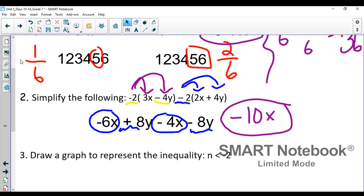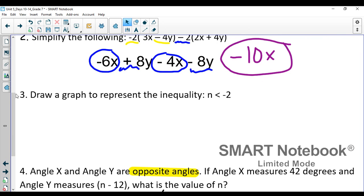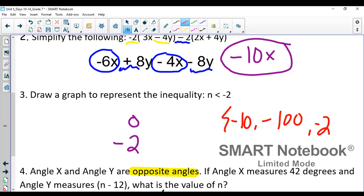Number three says draw a graph to represent the inequality n is less than negative two. So here's what I know. Everything is based off of negative two. And it also is going to be an open circle. Now numbers less than negative two are like negative 10, negative 100, negative 2,543. And all those numbers are to the left on the number line.